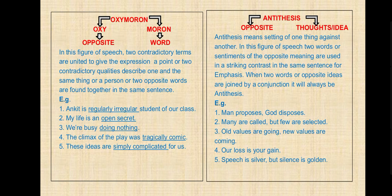Oxymoron — 'oxy' means opposite, 'moron' means word. In this figure of speech, two contradictory terms are united to give the expression a point, or two opposite words are found together in the same sentence. Examples: 'Ankit is a regularly irregular student of our class.' 'My life is an open secret.' 'Regularly irregular' and 'open secret' — two opposites used together. 'We are busy doing nothing.' 'The climax of the play was tragically comic.' 'These ideas are simply complicated for us.'